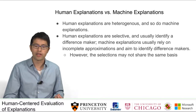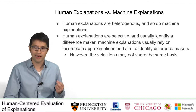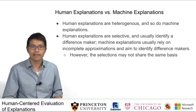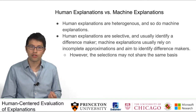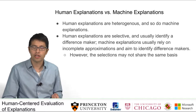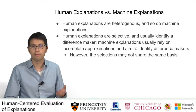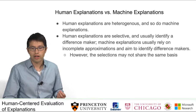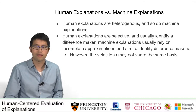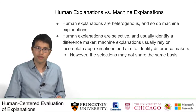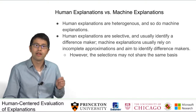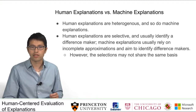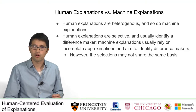Another important property is that human explanations are selective and usually identify a difference maker. In a way, this is also true for machine explanations. We need machine explanations because it's impossible for humans to make sense of a model of a billion parameters directly, and approximations are necessary. Machine explanations also aim to identify difference makers, but they do not necessarily share the same criteria as humans when they provide explanations.